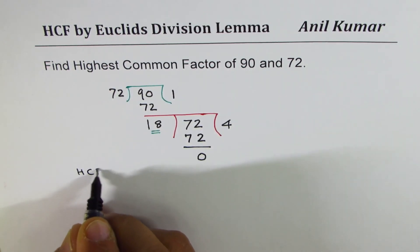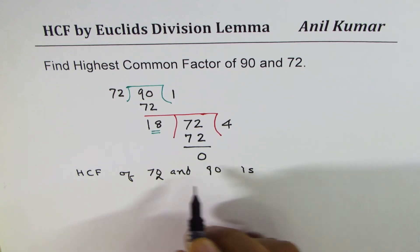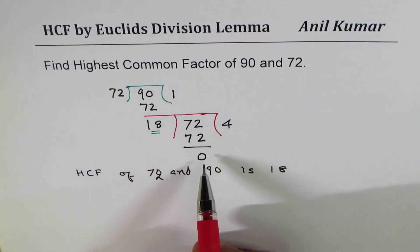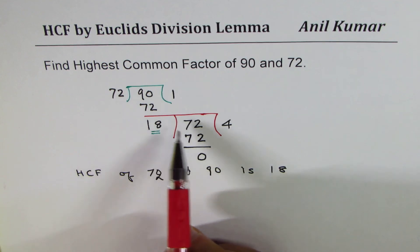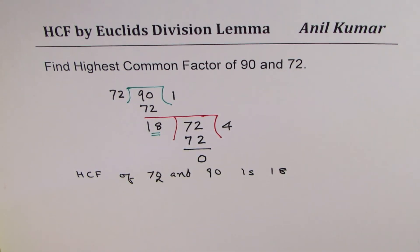Therefore, the highest common factor of 72 and 90 is 18. Traditionally, you do this with the help of factoring. But this division process could give you the result in just a couple of steps. Now I'll take a few more examples where we will work with three numbers and try to find the greatest common or highest common factor using Euclid's division lemma. I hope that helps. Thank you and all the best.